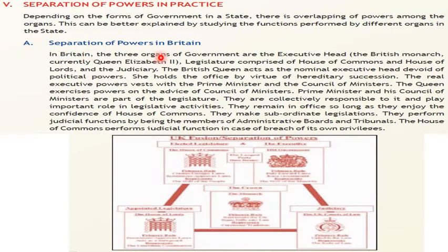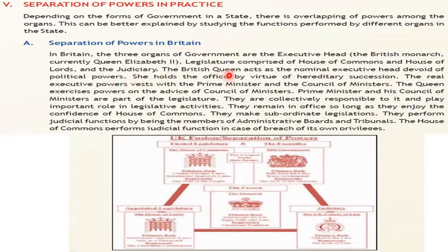In Britain, the three organs of the government are: the executive head — the British Monarch, currently Queen Elizabeth II; the legislature, comprised of the House of Commons and House of Lords; and the judiciary. The British Queen acts as a nominal executive head, devoid of political powers. She holds the office by virtue of hereditary succession. The real executive powers vest with the Prime Minister and the Council of Ministers.